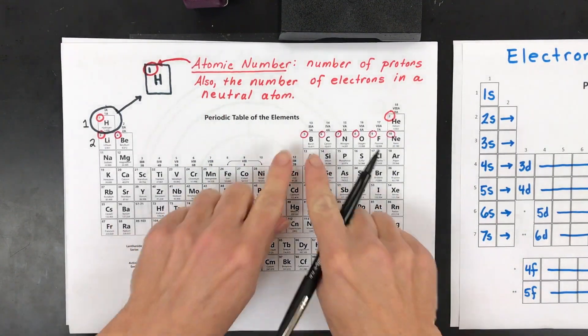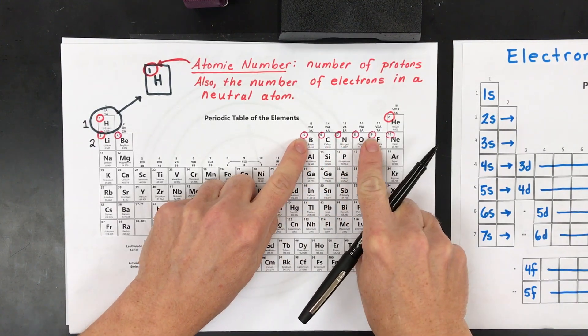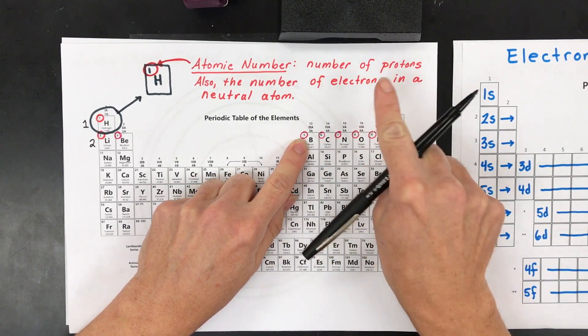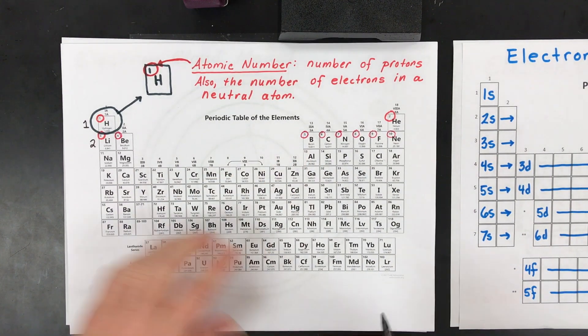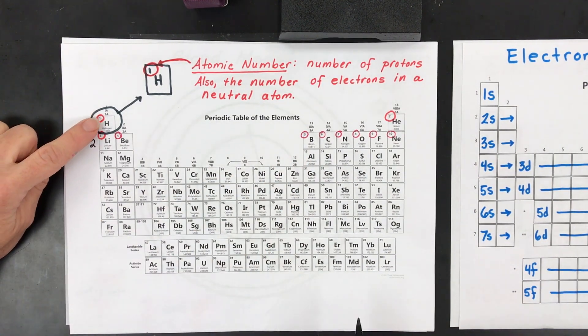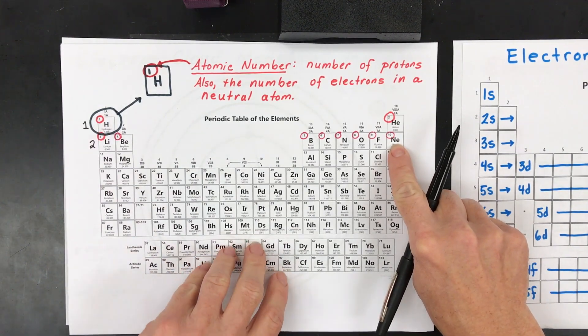The first thing you're going to need is a periodic table that has the atomic number listed at the top. That's the number of protons, but for right now the more important is that's the number of electrons in a neutral atom. I'm going to just do in this video elements 1 through 10, which is hydrogen through neon.